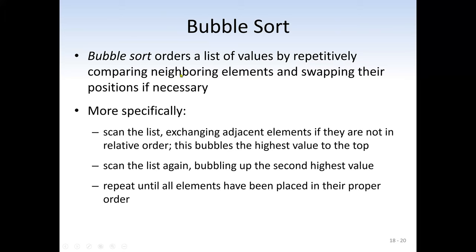Now let's cover bubble sort. Bubble sort orders a list of values by repeatedly comparing neighboring elements and swapping their positions if necessary. We scan the list and exchange adjacent elements if they are not in relative order — this bubbles the highest value to the top. Normally we scan from the beginning looking for the largest number, and by the time we reach the end, the largest value has bubbled to the end. We then repeat to bubble the second highest value, continuing until all elements are in proper order.